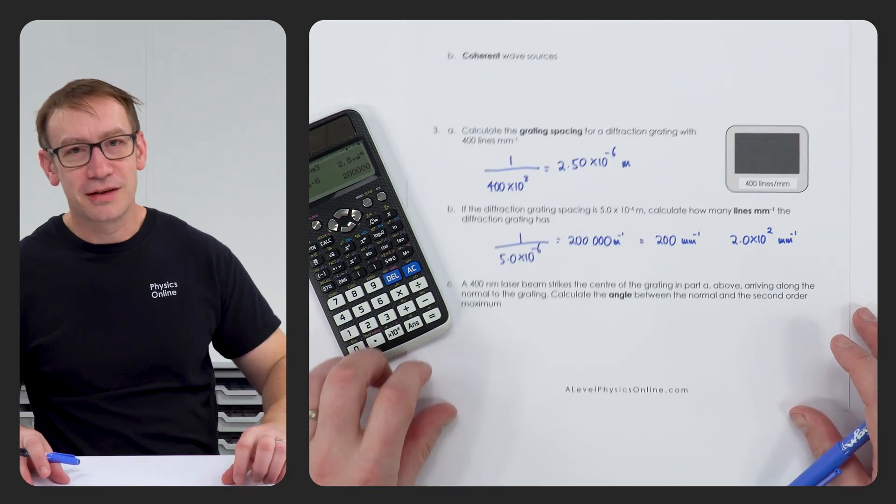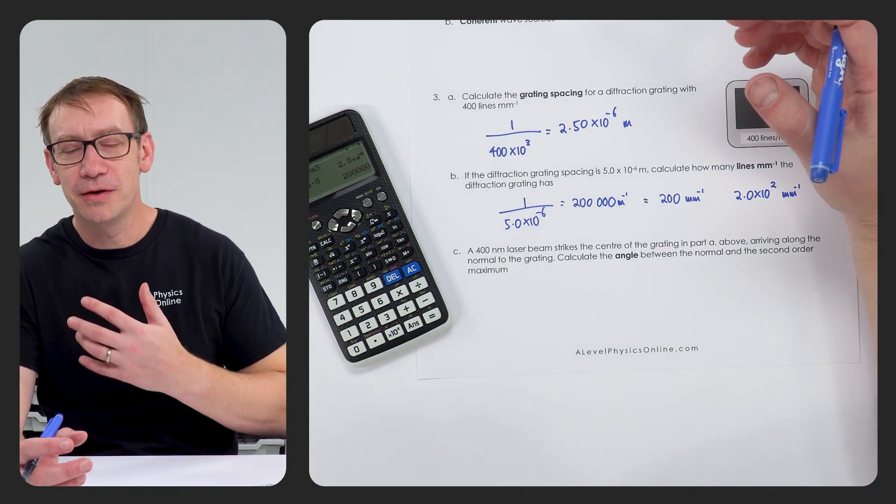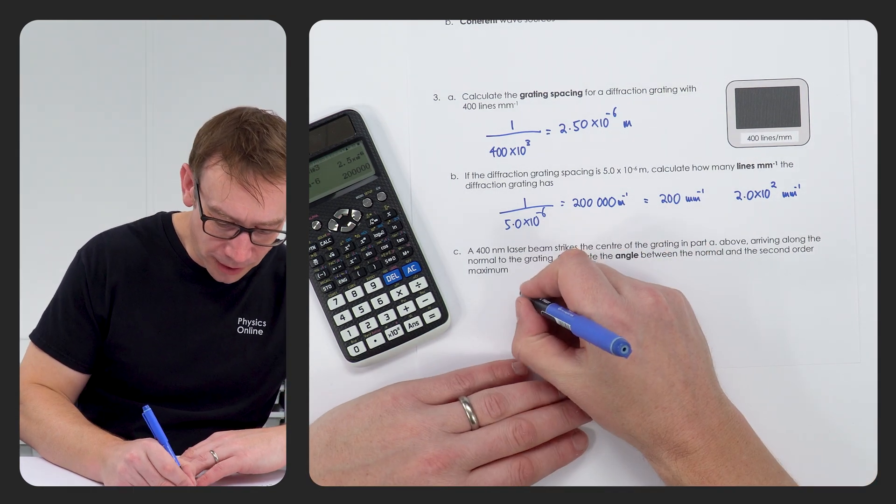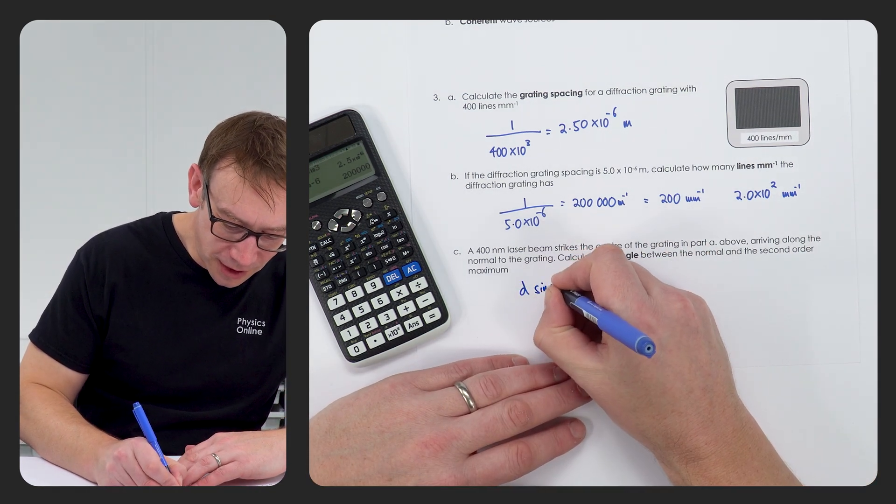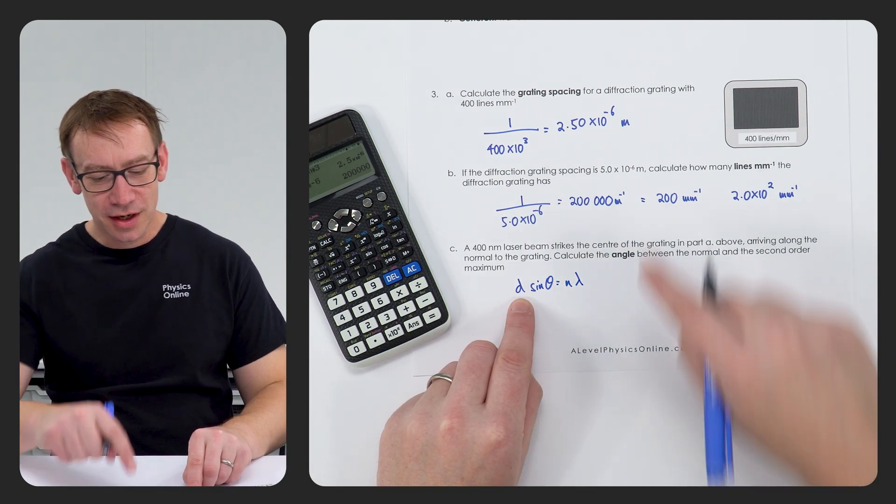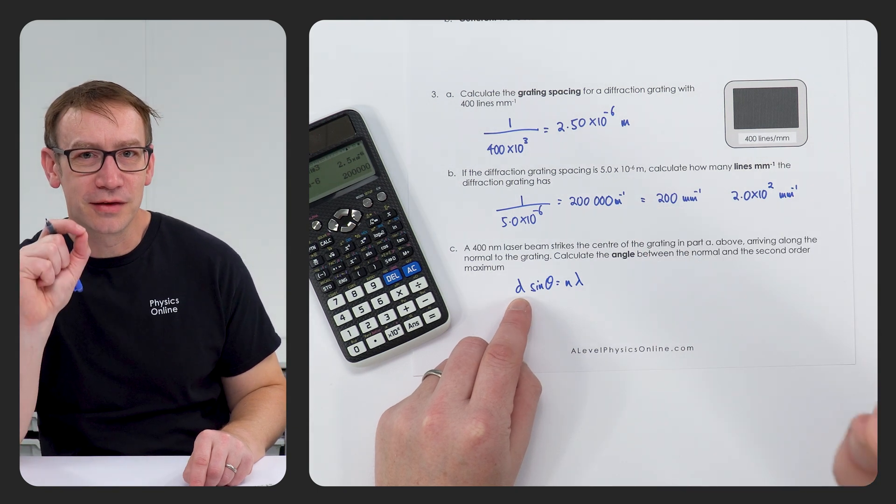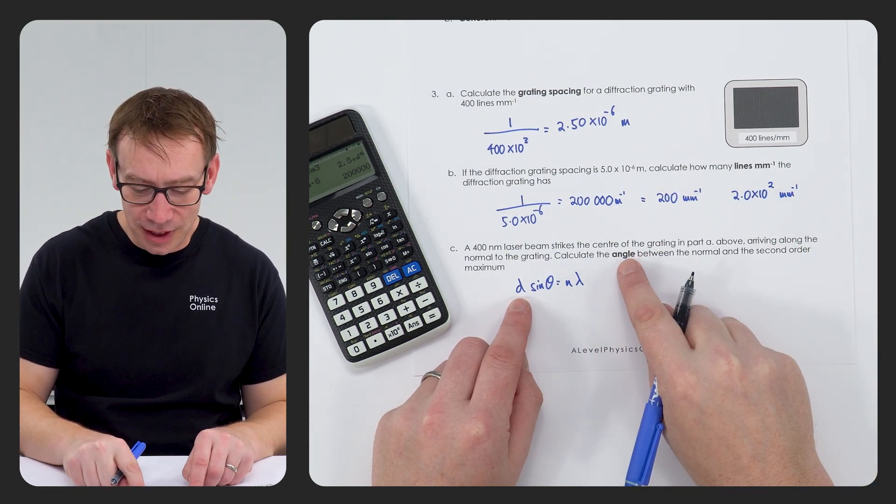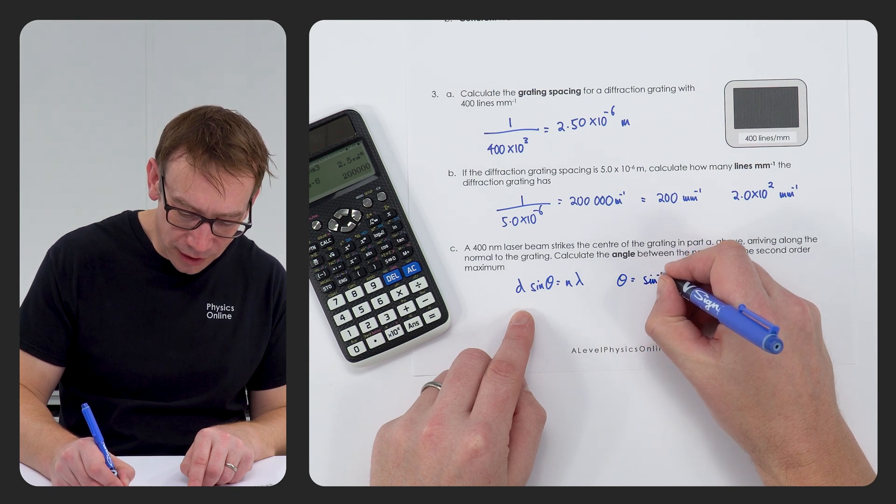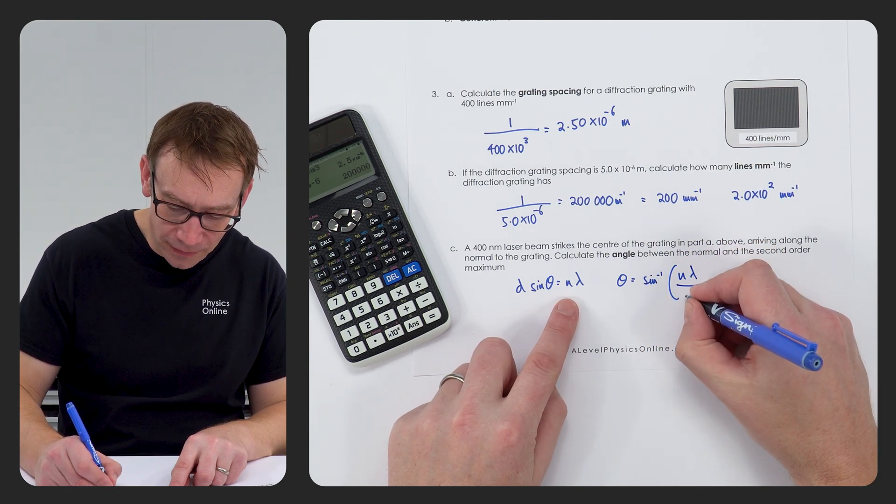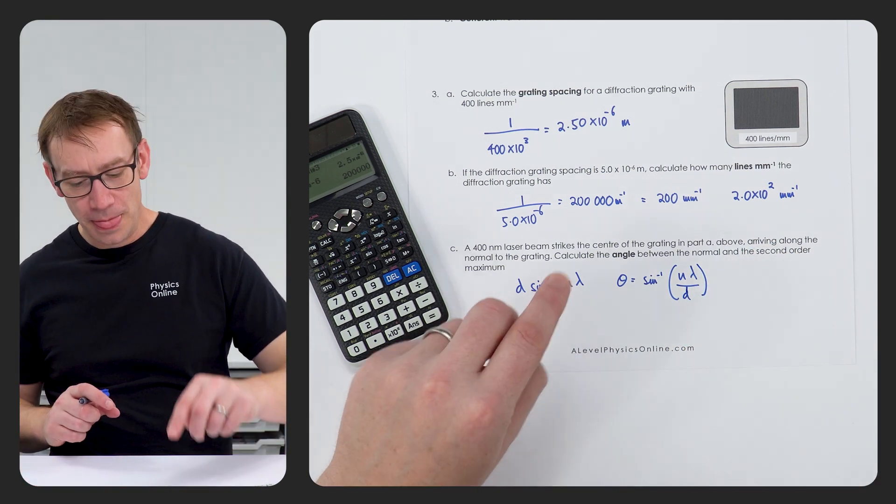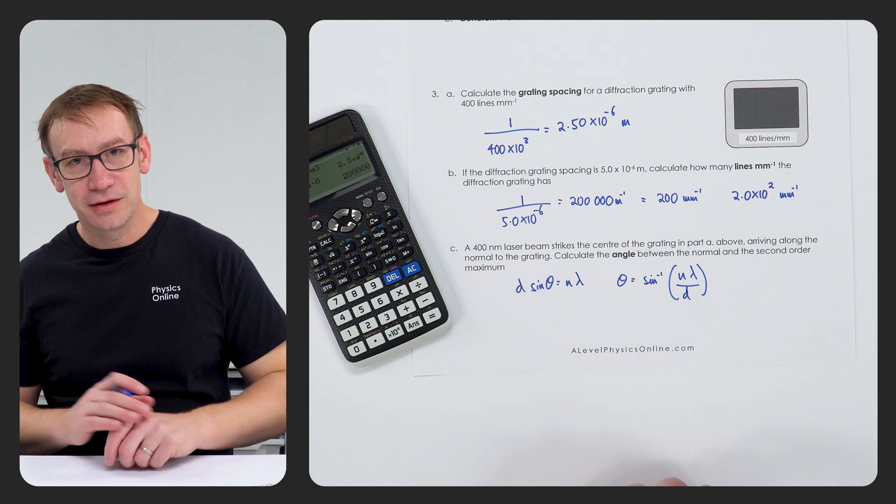The next one is the kind of thing that you'll probably get in maybe a multiple choice question or as part of a bigger question. The first thing I'm going to do is write down the equation: d sin θ equals n λ. Here we've got d, which is the grating spacing we worked out earlier. We want to look at the angle, so if we rearrange this to make theta the subject, that's going to be sin to the minus 1 of n λ divided by d.